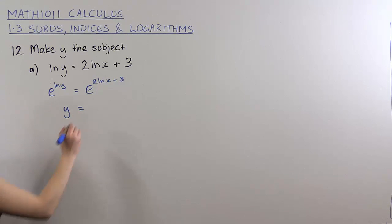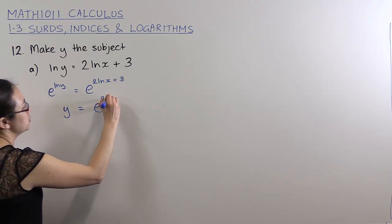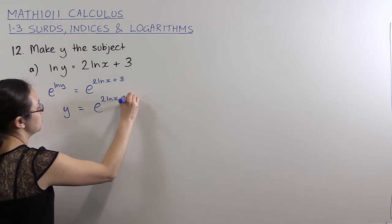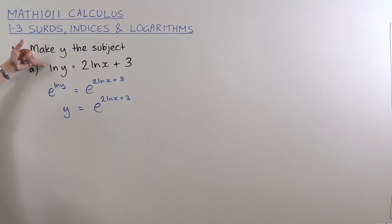So y is just e to the power of 2 ln x plus 3. Now you could have gotten from the question to this line straight away, because that's what it means to be the logarithm of y.